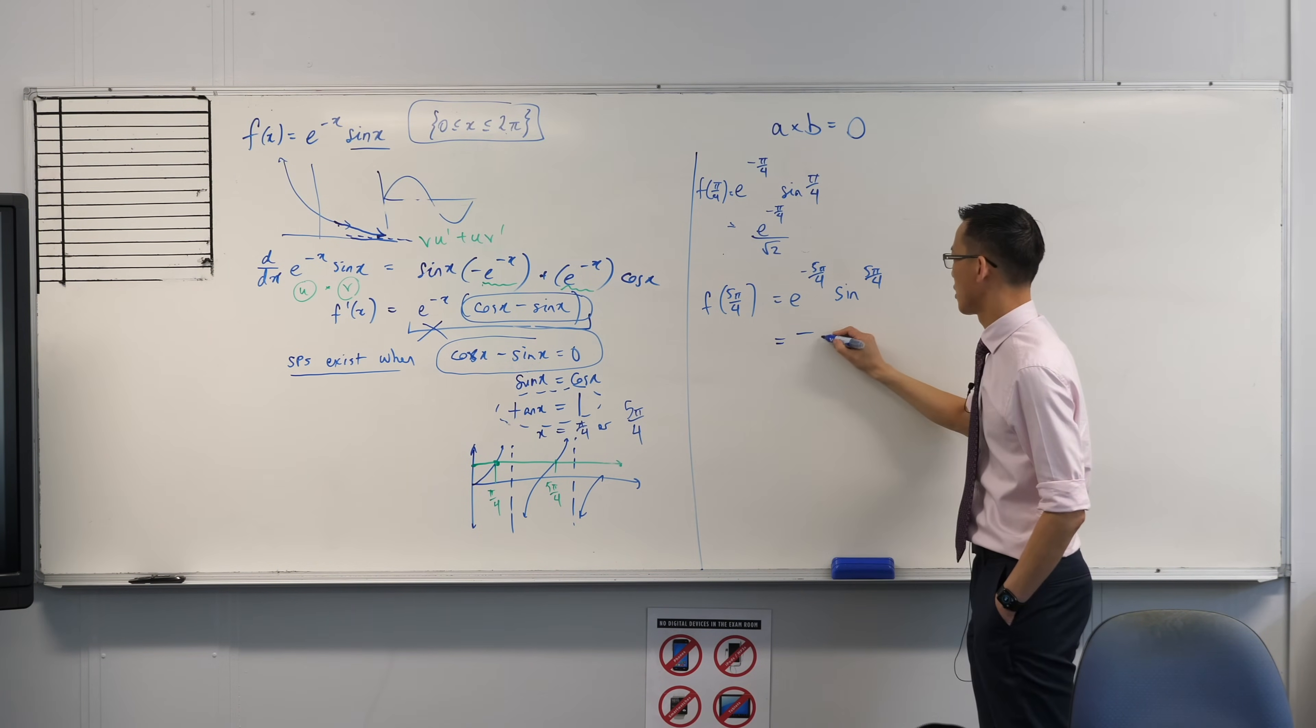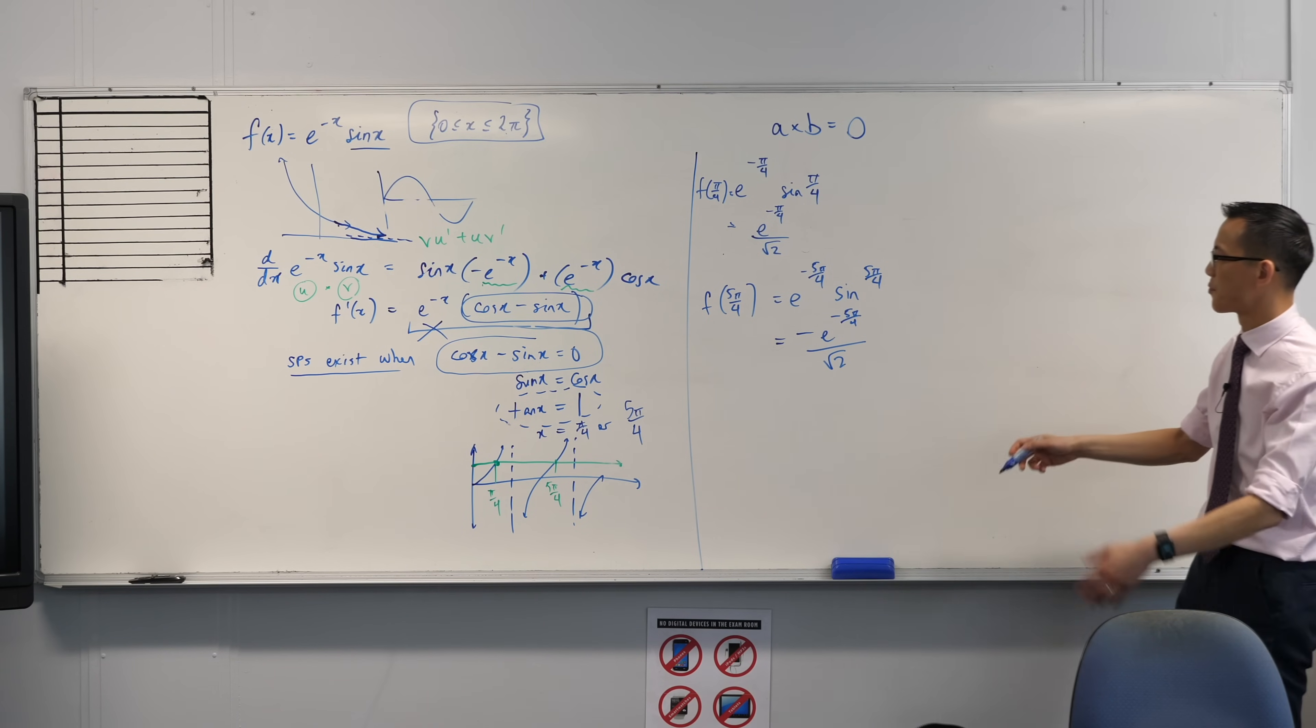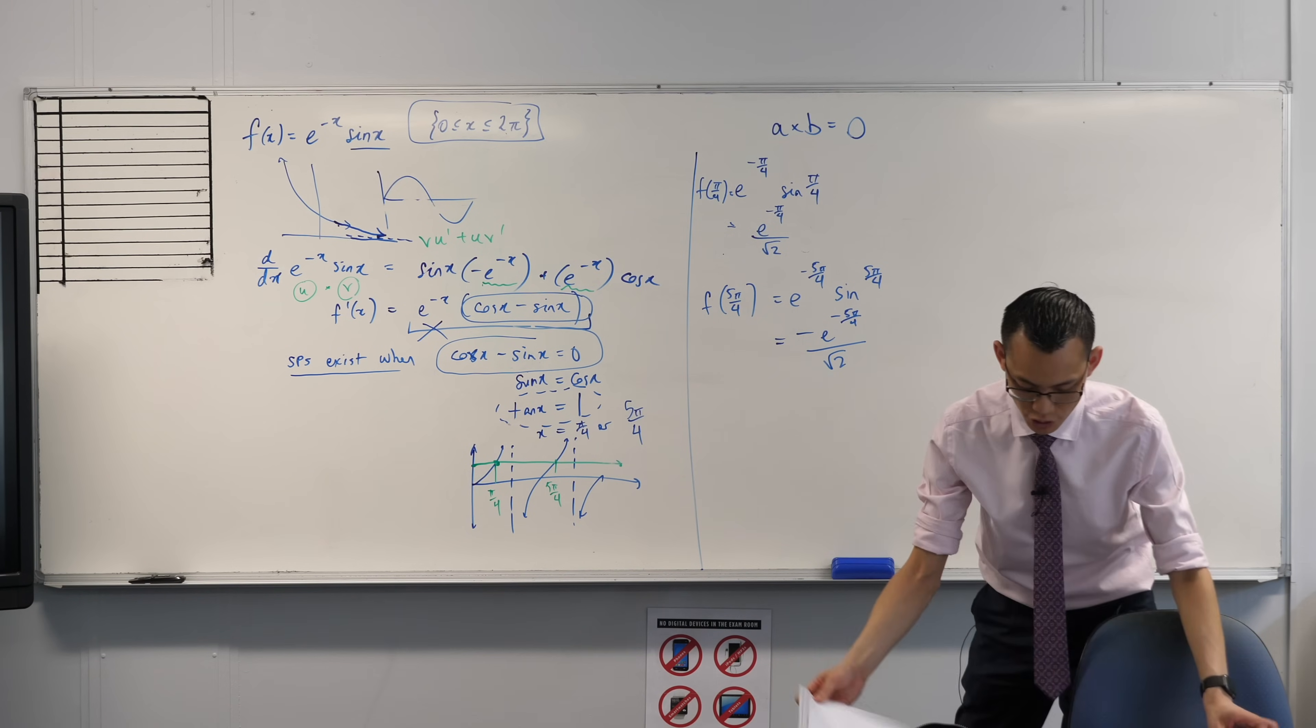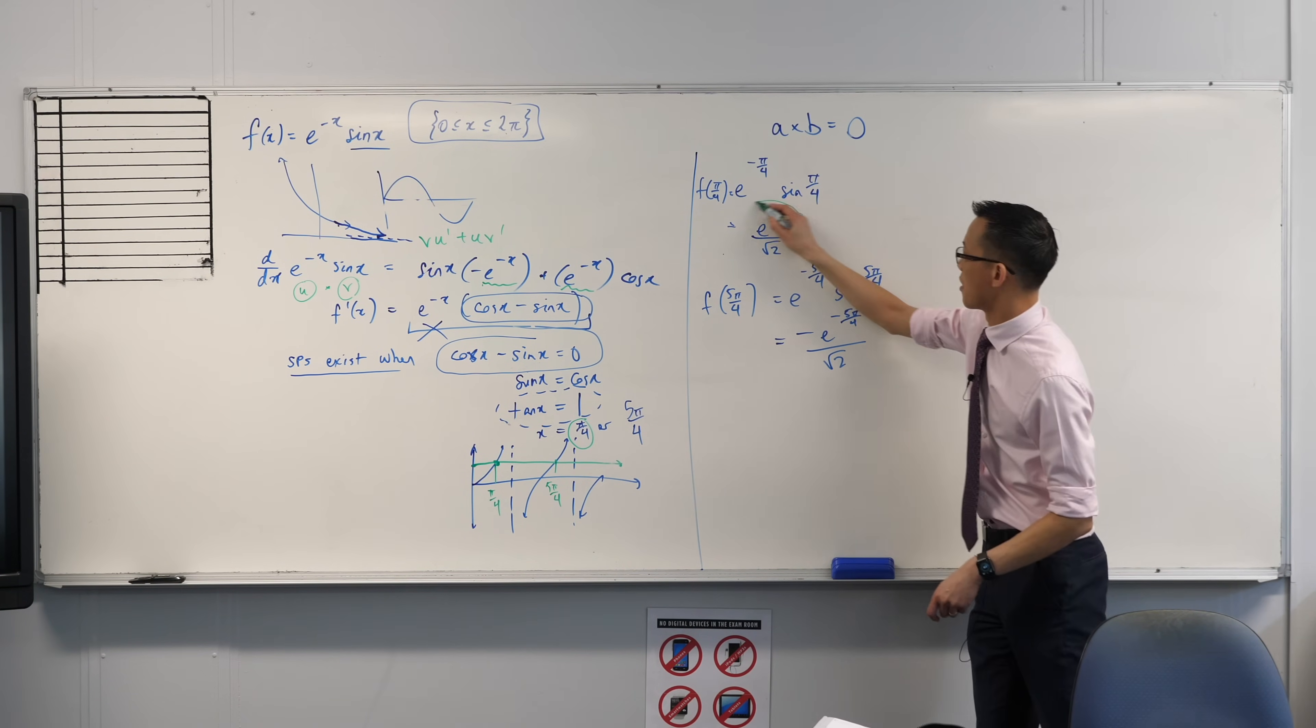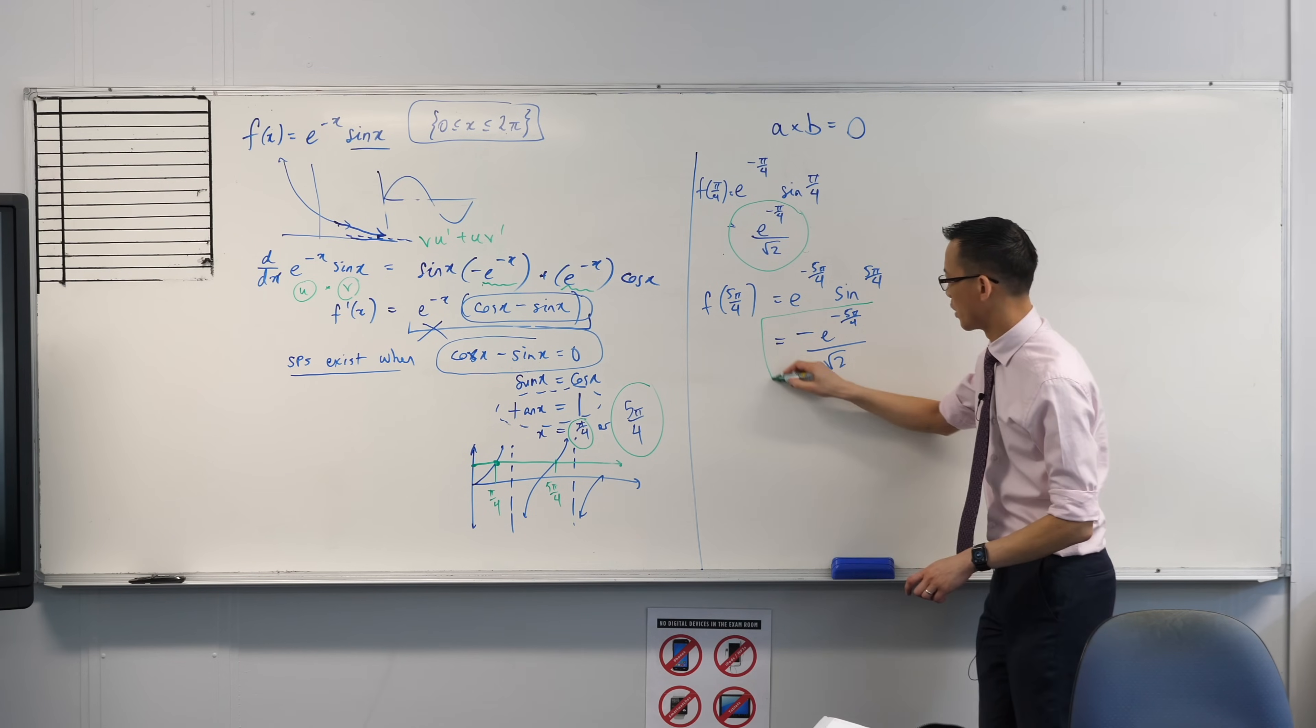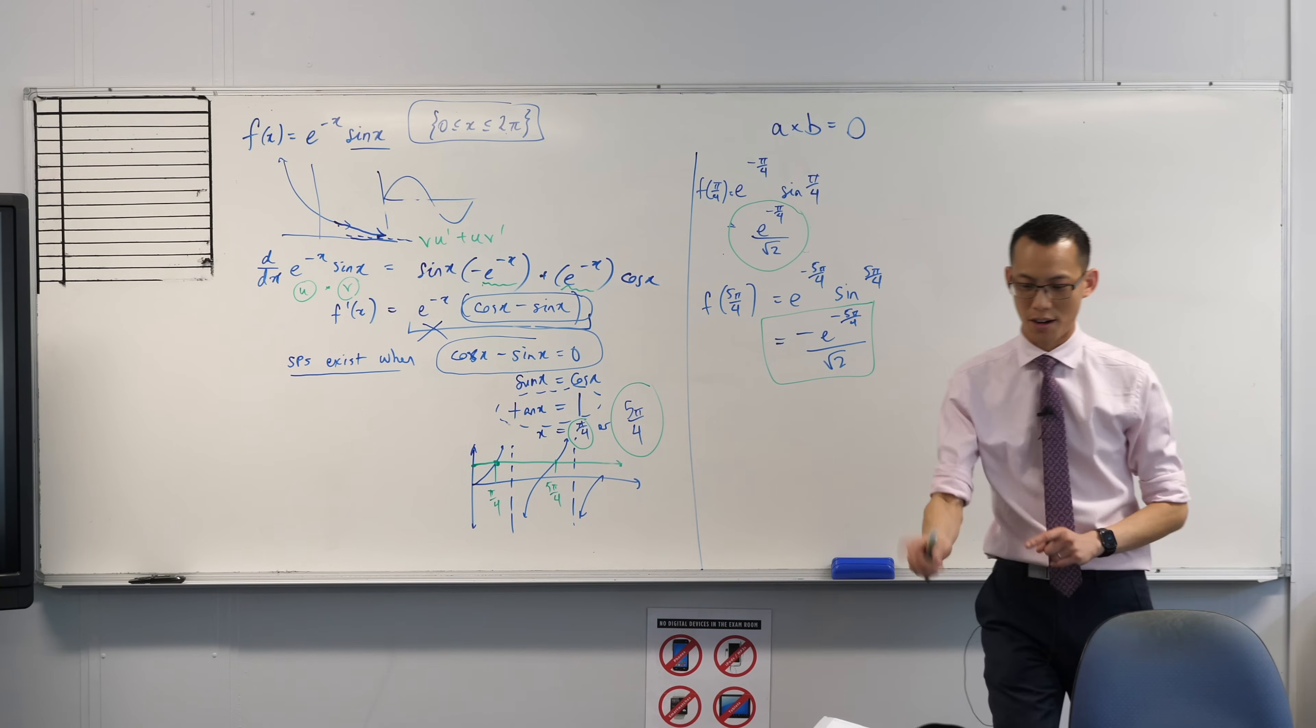And then I would do the other one, five pi on four. Sine of five pi on four, that's going to be the negative. So it will actually be negative e to the power and some exact stuff that my calculator will worry about. This actually is the answer for this part of the question. Pi on four matches with that number, and then five pi on four matches with this number. These are the coordinates of the stationary points.